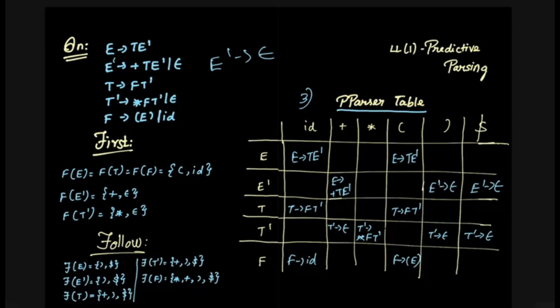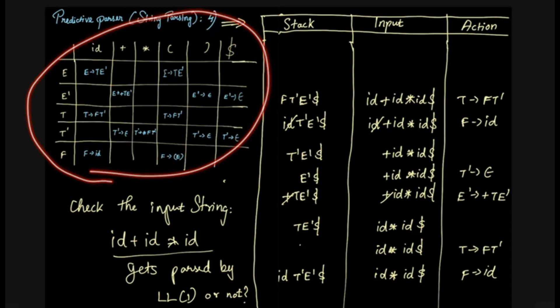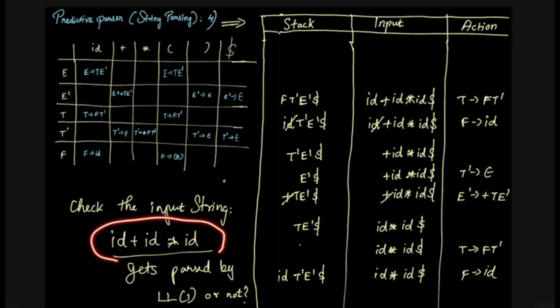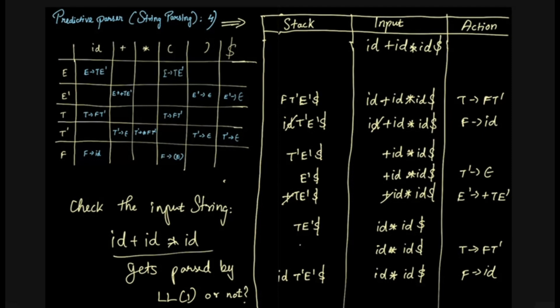Now we have to construct the string parsing using the predictive parser table. The given input string is id plus id cross id. We have to do the string parsing. We print three columns: stack, input, and action. First, we set up the initial step with dollar in the stack. We add dollar to the end of the input string as well, giving us id plus id cross id dollar.